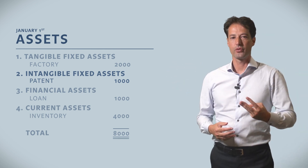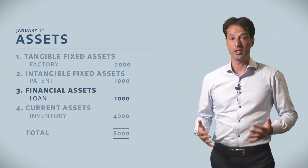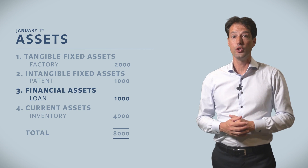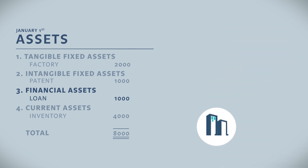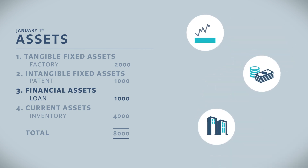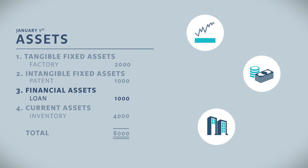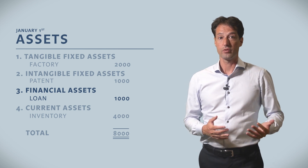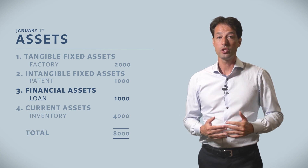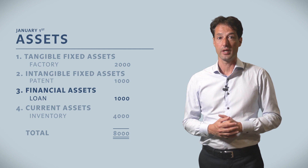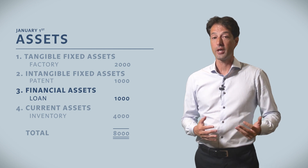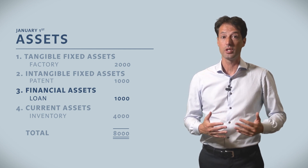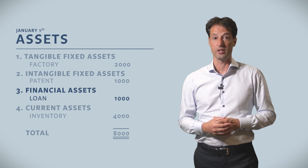Category number 3, a financial asset is also a non-physical asset, but its value is derived from a financial contractual claim that exists for a longer period. A good example is a loan. In our shoe factory, the 1000 represents a loan to our supplier in the form of a debt contract, and the supplier needs to pay us back this amount plus interest in a number of years.